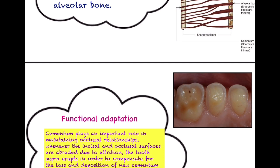There must be some tissue that can compensate for this attrition. Whenever attrition occurs, cementum will compensate by increasing its deposition around the root so that the height of the tooth can be maintained at a level where proper occlusal contact is happening. This is functional adaptation — due to continuous attrition, there is loss of tooth surface, and from the apex of the tooth, there is continuous deposition of cementum so that the tooth can maintain its proper occlusal contact.